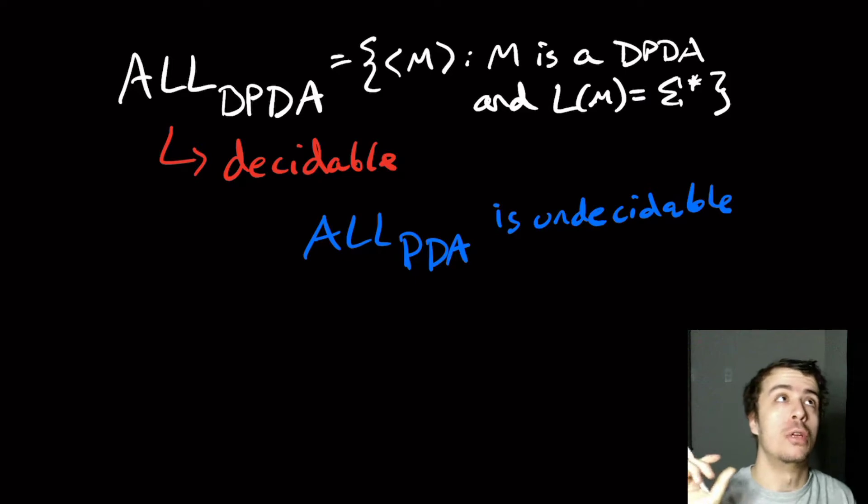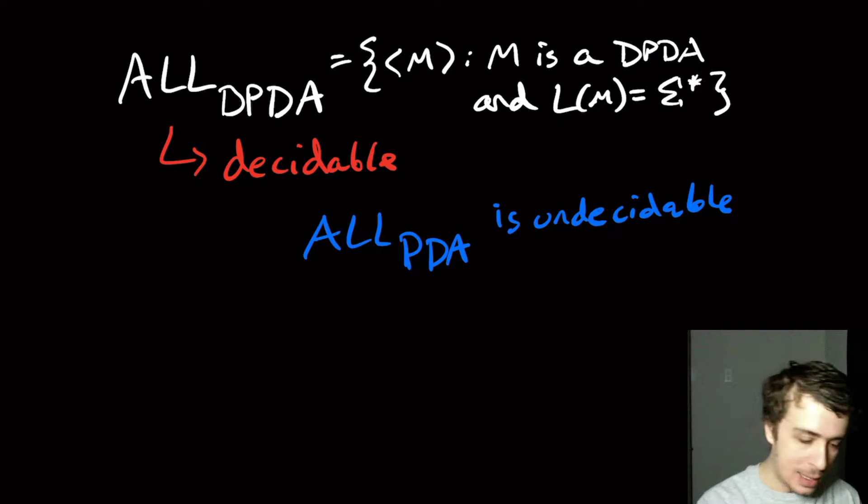The reason is that it's equivalent to ALL_CFG, and we show that ALL_CFG is undecidable. And the way that you do that is you embed the Turing machine, or at least the transitions of the Turing machine, into the context-free grammar so that it accepts something called reverse accepting computation history. And the grammar will not accept everything if and only if there is a sequence of configurations that cause the Turing machine to accept W.